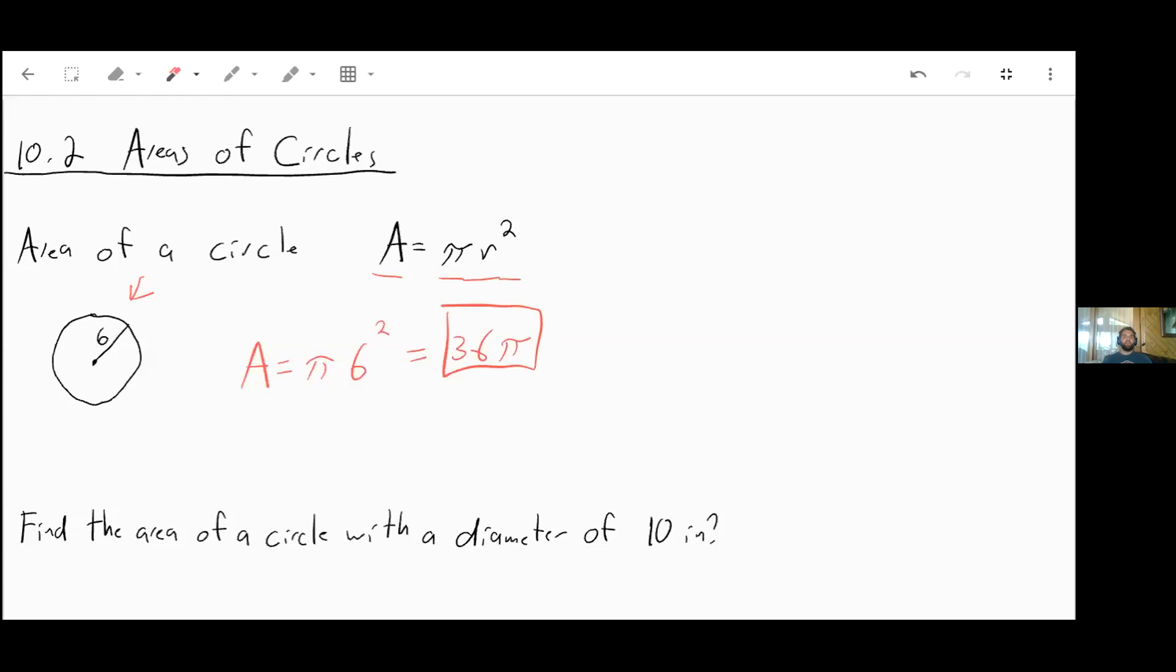Now, if your book is expecting you to multiply further, it might have a different number as your answer, so you might have to multiply it out to check to make sure you got the right answer. But as is, this is a perfectly acceptable answer for me.